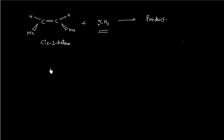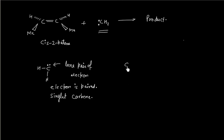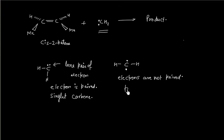To discuss further, we must know there are two kinds of carbene. One carbene in which the two electrons are paired — we have a lone pair of electrons. This carbene is called singlet carbene. We have another kind of carbene in which electrons are not paired, and this kind is called triplet carbene.